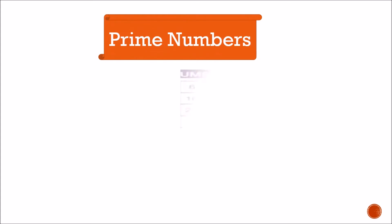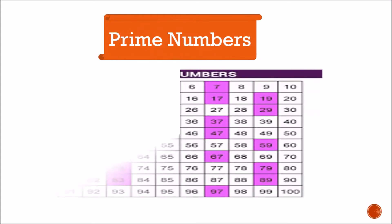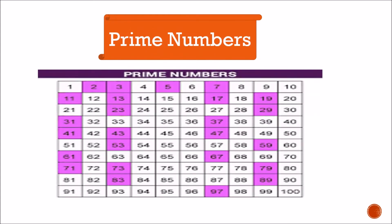Now some examples of prime numbers. The highlighted ones are all prime numbers from 1 to 100 — all the highlighted ones are the prime numbers.